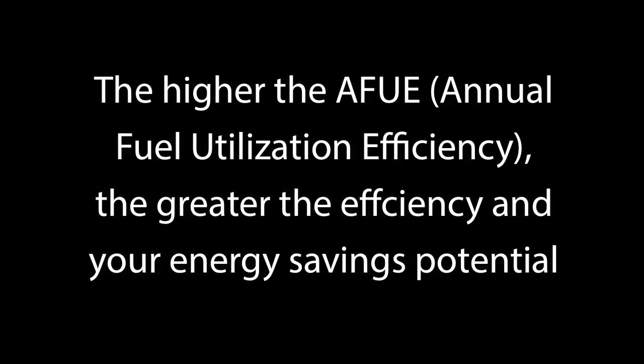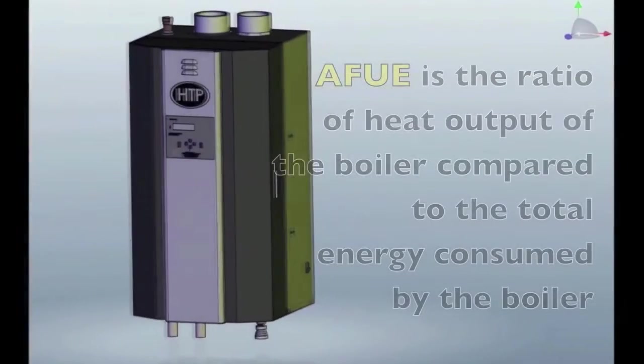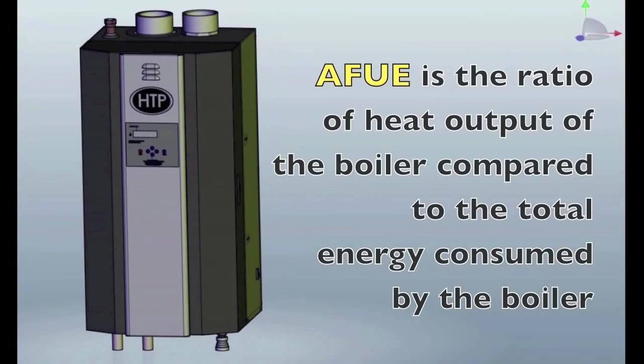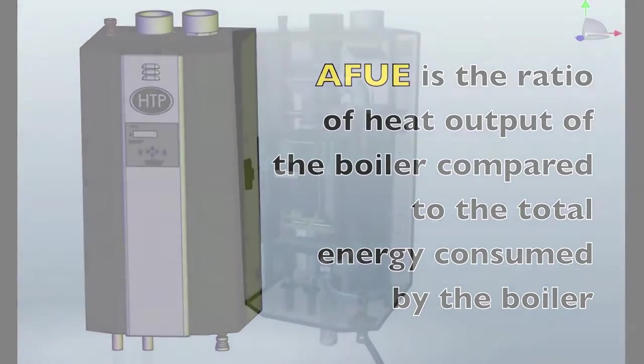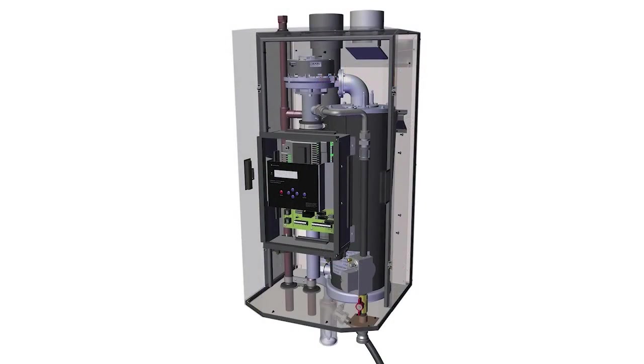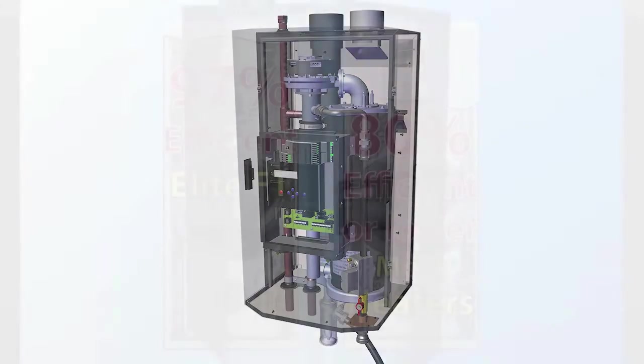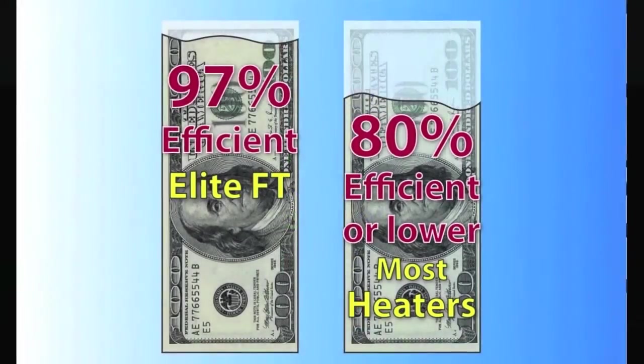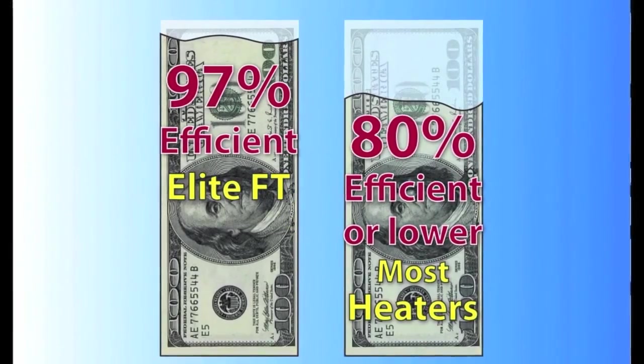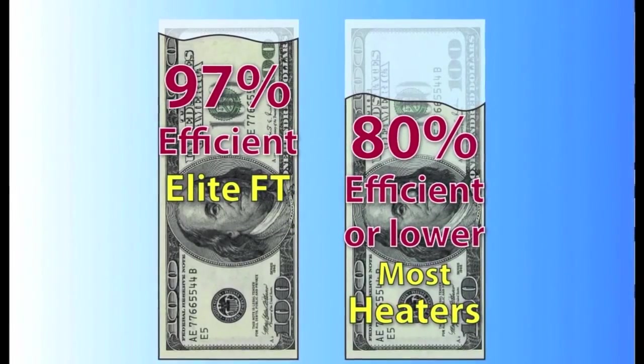The Department of Energy defines AFUE as the ratio of heat output of the boiler compared to the total energy consumed by the boiler. An AFUE of 97% means that 97% of the energy in the fuel becomes heat for the home, and the other 3% escapes up the chimney or elsewhere.